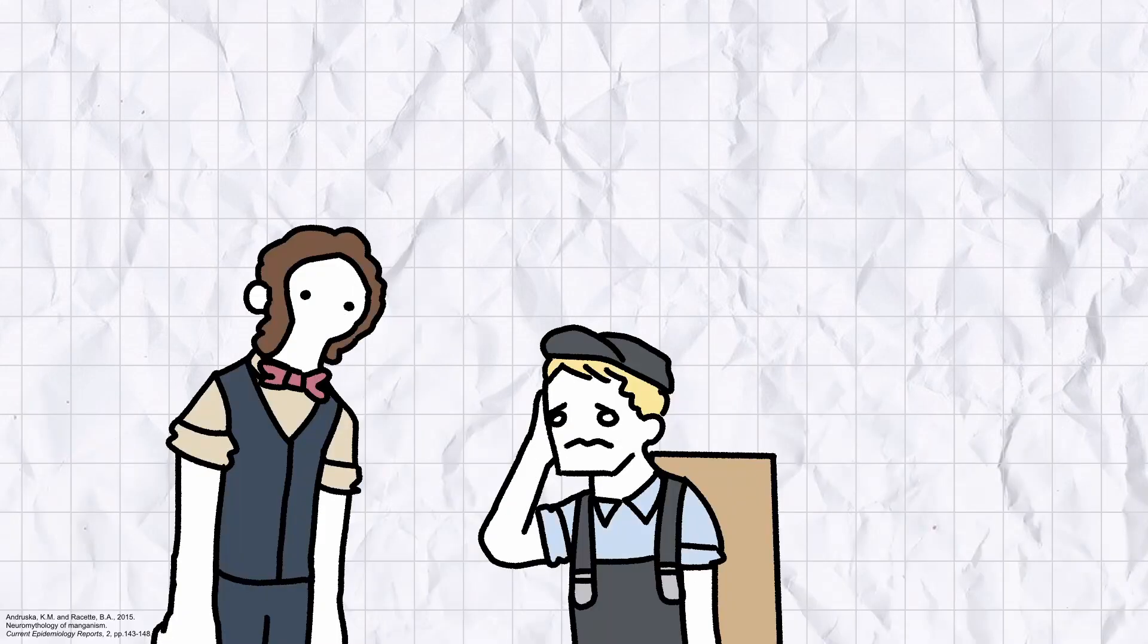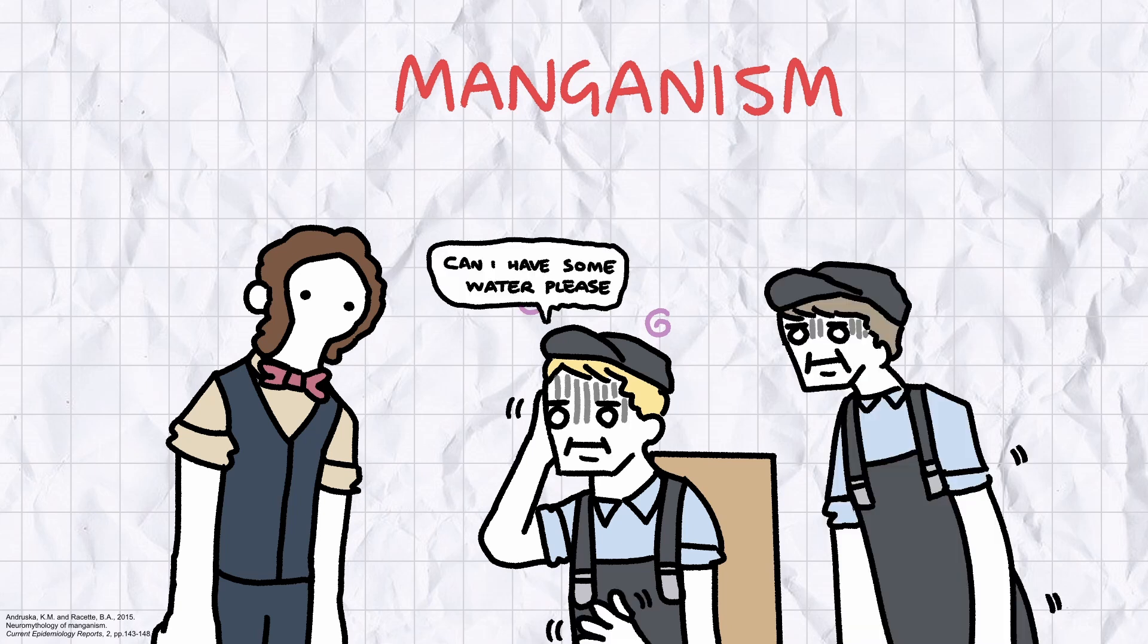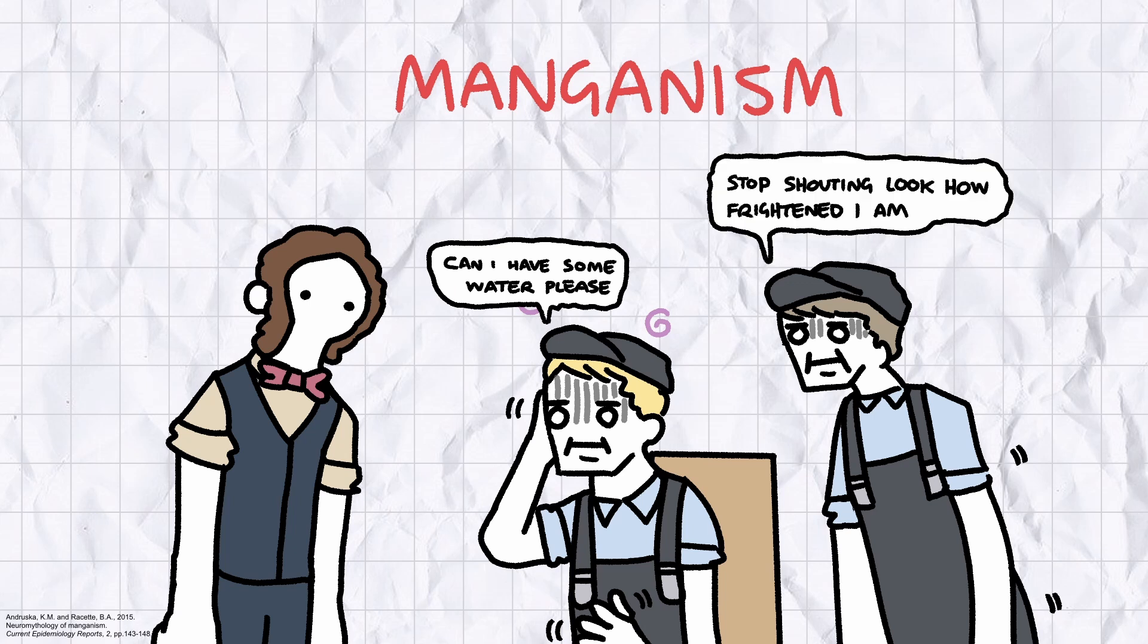In the 19th century, doctors noticed that young steel workers were showing signs of an unusual new disease that would later be known as manganism. Early stage symptoms: mood swings and headaches. Late stage symptoms: tremors, whispering, monotone speech, a slow shuffling gait, and hypomimia, a permanently muted and mask-like facial expression.